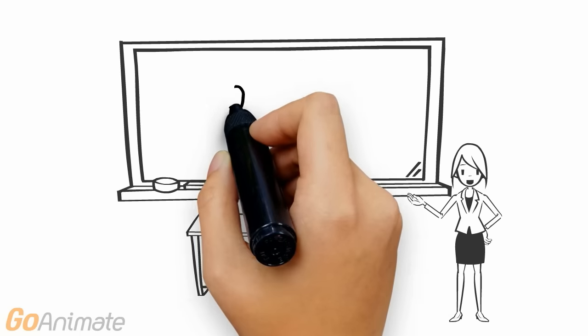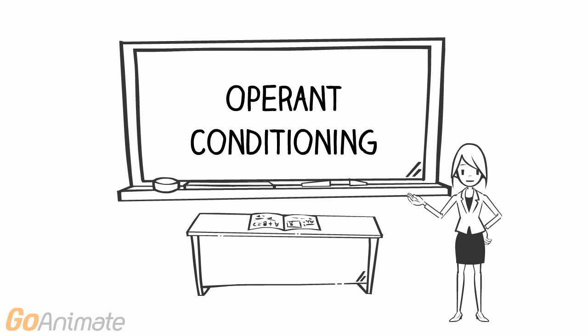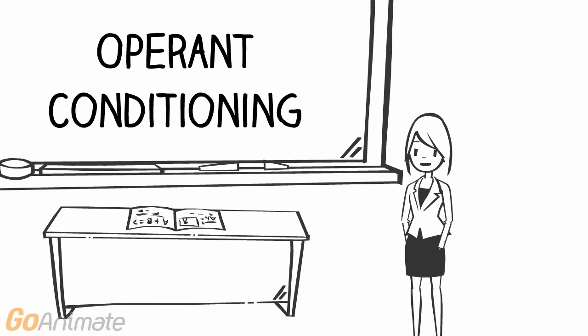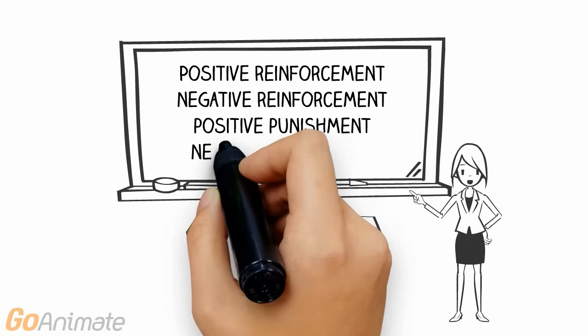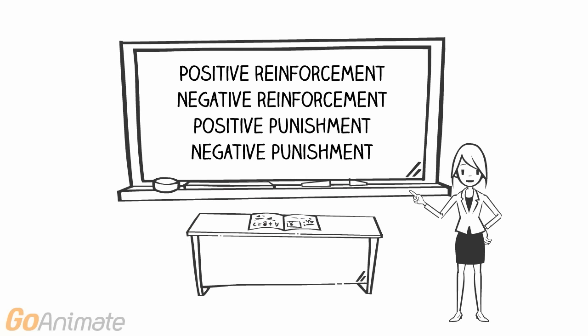Operant conditioning is a type of learning where the consequences of your behaviors shape your future behaviors. Those consequences may be either a reinforcement or a punishment. We will be focusing on the following terminology.